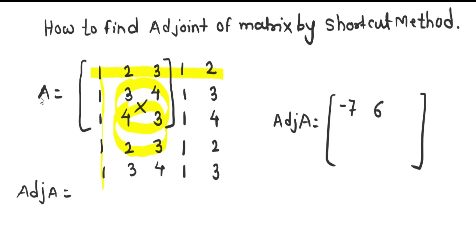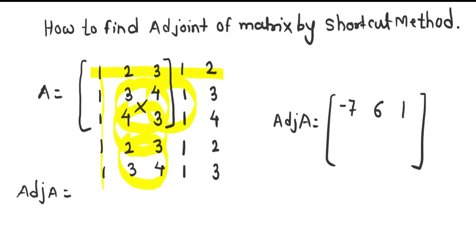Next, we convert this matrix into a 2 by 2 determinant and calculate it. Here 4 into 2 is 8 minus 3 into 3 is 9, so we get 8 minus 9, which gives us negative 1. Next, we take the matrix 4 into 1 minus 3, giving us 4 minus 3, which is 1.